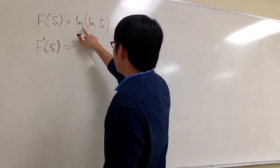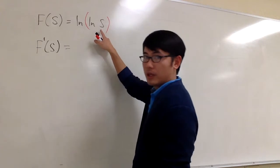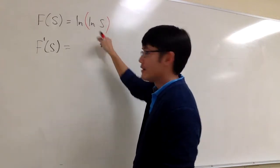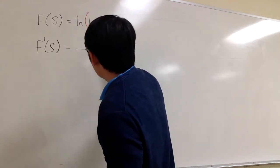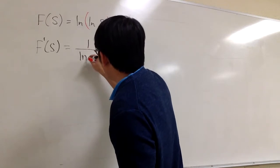So to take the derivative of ln of something, it's going to be 1 over something. So we are going to get 1 over, the inside is ln s.